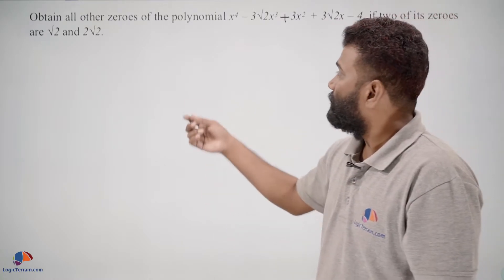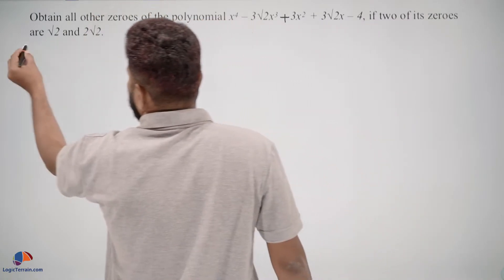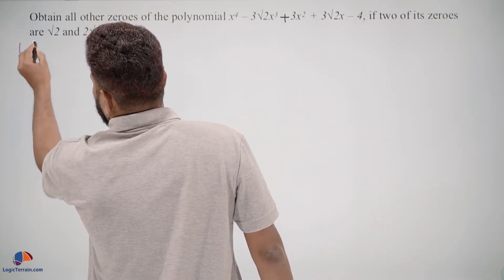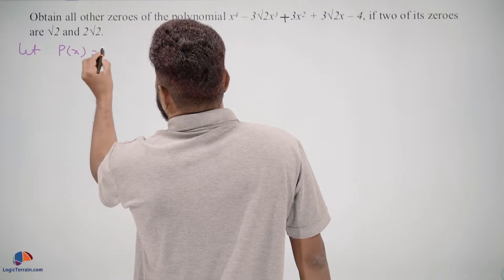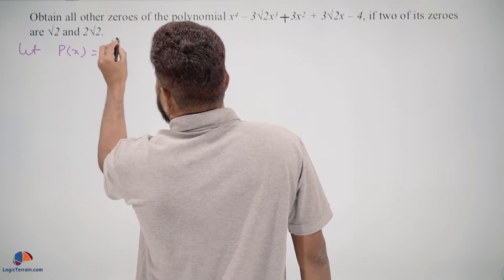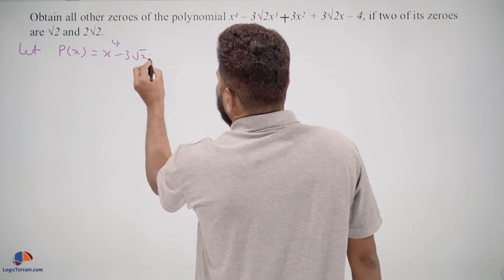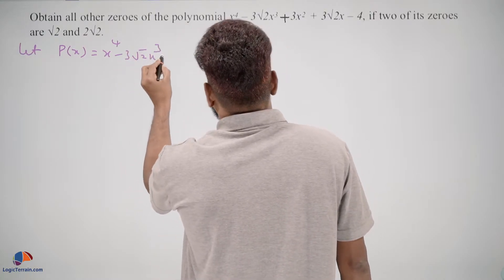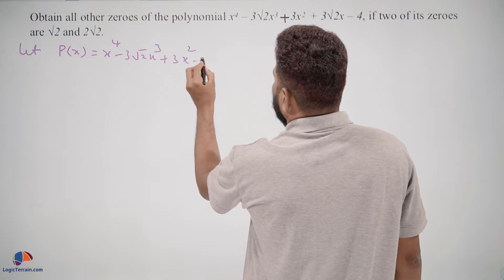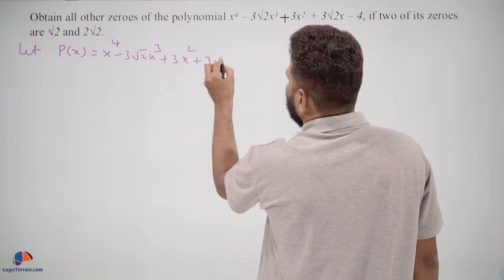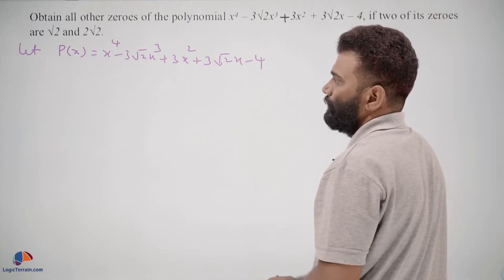Let us give a name to this polynomial. Let P(x) equal x to the power of 4 minus 3 square root 2 x cubed plus 3 x squared plus 3 square root 2 x minus 4.